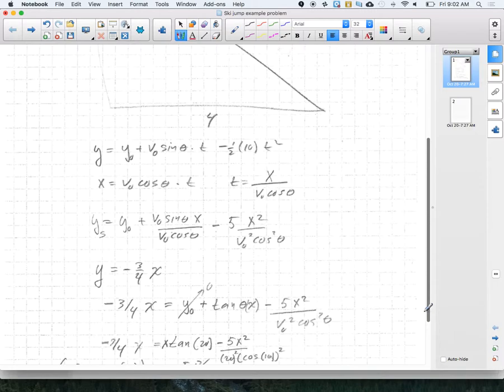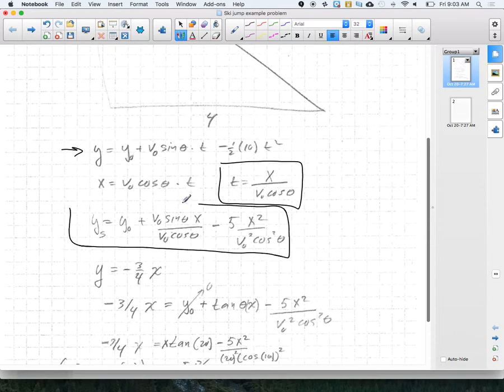Once we've done that, we come up with time as a function of position. If I know the x position, I know how long he or she has been traveling for. With that, I can come back to the initial y equation and plug that in to get y as a function of x.